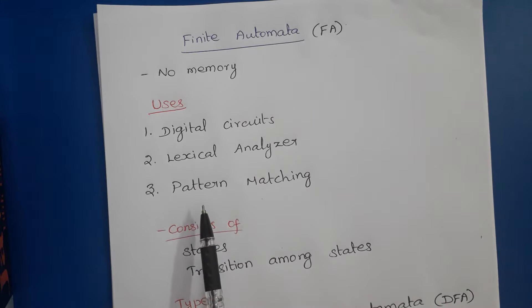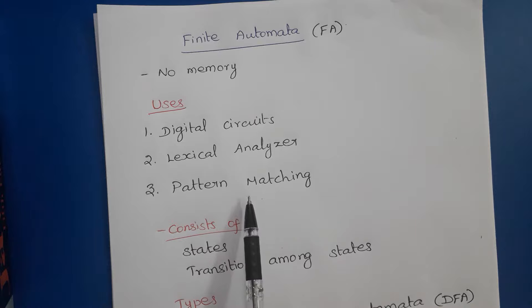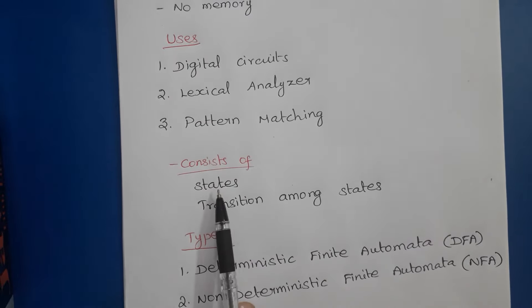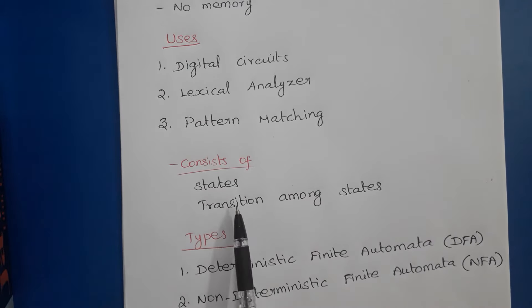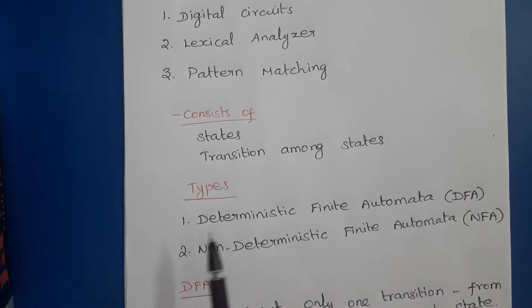The third use is pattern matching in large bodies of text. For example, if we want to search a word, phrase, or sentence in a web page, then this model can be used. A finite automata consists of a set of states and transitions among states based on the input symbols.